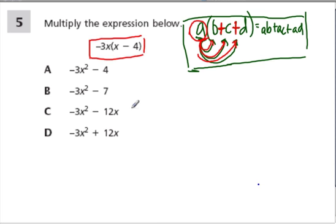So first, what do we have? Well, it's negative 3x times x, and then we have negative 3x times negative 4. And this, of course, is a negative 4 because of the minus sign right there. So that's one way to think about it.